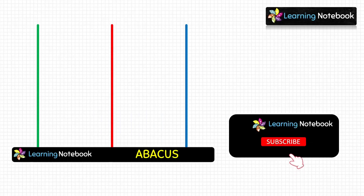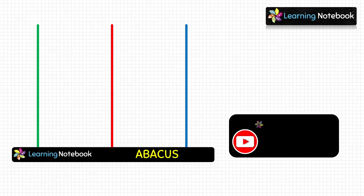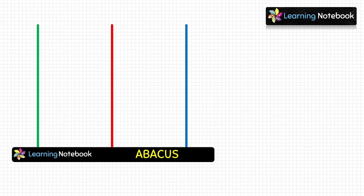Now I have made an abacus on paper. Students, you can also easily make this abacus on a sheet with the help of your sketch pens. As you can see, this abacus has three spikes. The blue spike stands for ones place, represented by O. The red spike stands for tens place, represented by T. The green spike stands for hundreds place, represented by H.